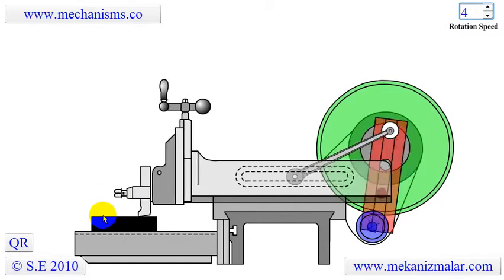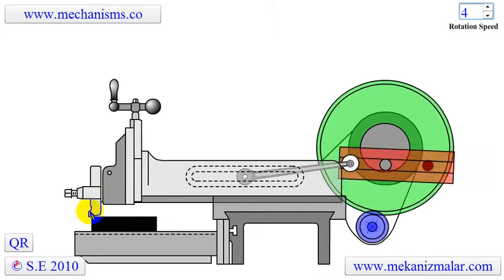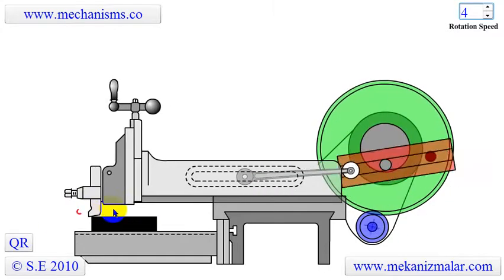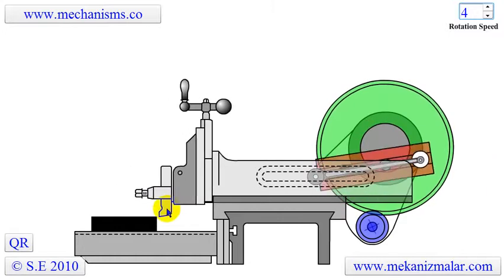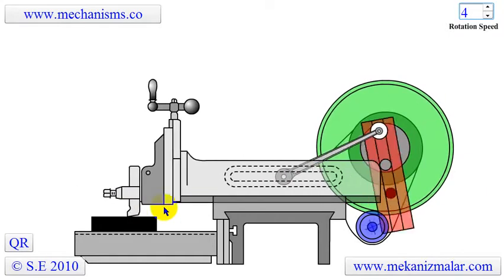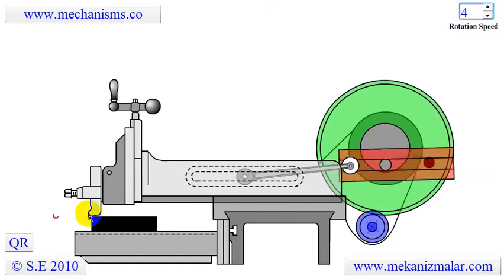The slow forward motion of the ram is the cutting stroke, whereas the fast backward motion of the ram is the non-cutting stroke. Since cutting requires much more force, it is done during the slow forward motion of the ram. To increase efficiency, the return stroke is performed at a much faster rate.